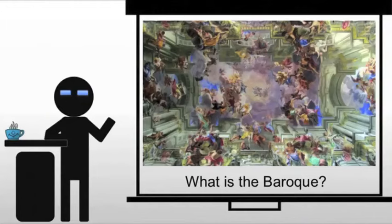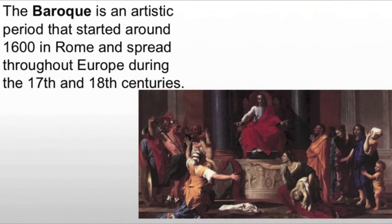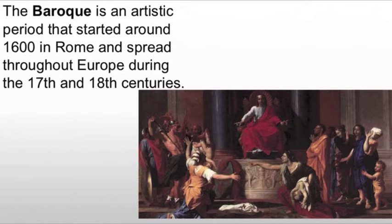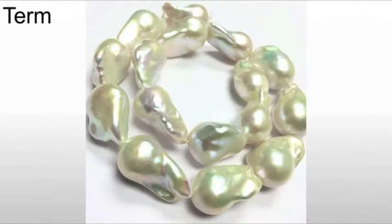Baroque is a general term for 17th century art, but the term itself is kind of problematic. The period encompasses a broad range of styles and genres, from painting to sculpture to architecture. We will see differences between Catholic and Protestant Baroque styles, primarily between Italy and Spain on the Catholic side and Northern Europe on the Protestant side. The term Baroque actually comes from the Portuguese term for an irregularly shaped pearl — it's beautiful, but it's not quite everything.